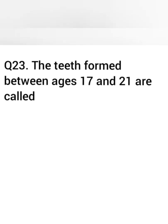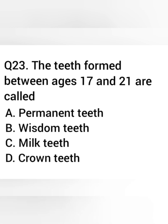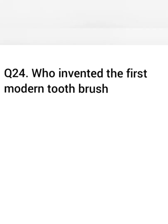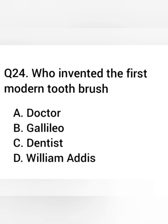Question 23. The teeth formed between ages 17 and 21 are called — Answer: Wisdom teeth. Question 24. Who invented the first modern toothbrush? Answer: William Addis.